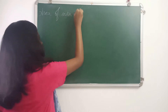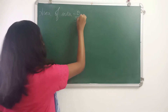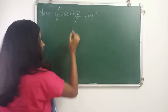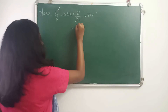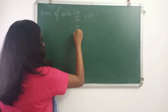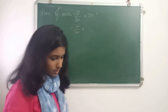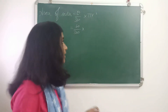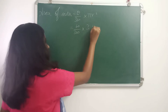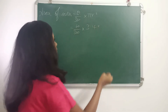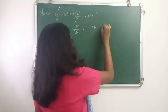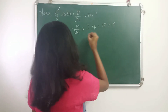Area of sector is equal to theta by 360 into pi r squared. Now theta is given as 60 degrees in the question, so 60 by 360, and the value of pi is to be used as 3.14. So into r squared, r squared is 15 squared, that is 15 into 15.